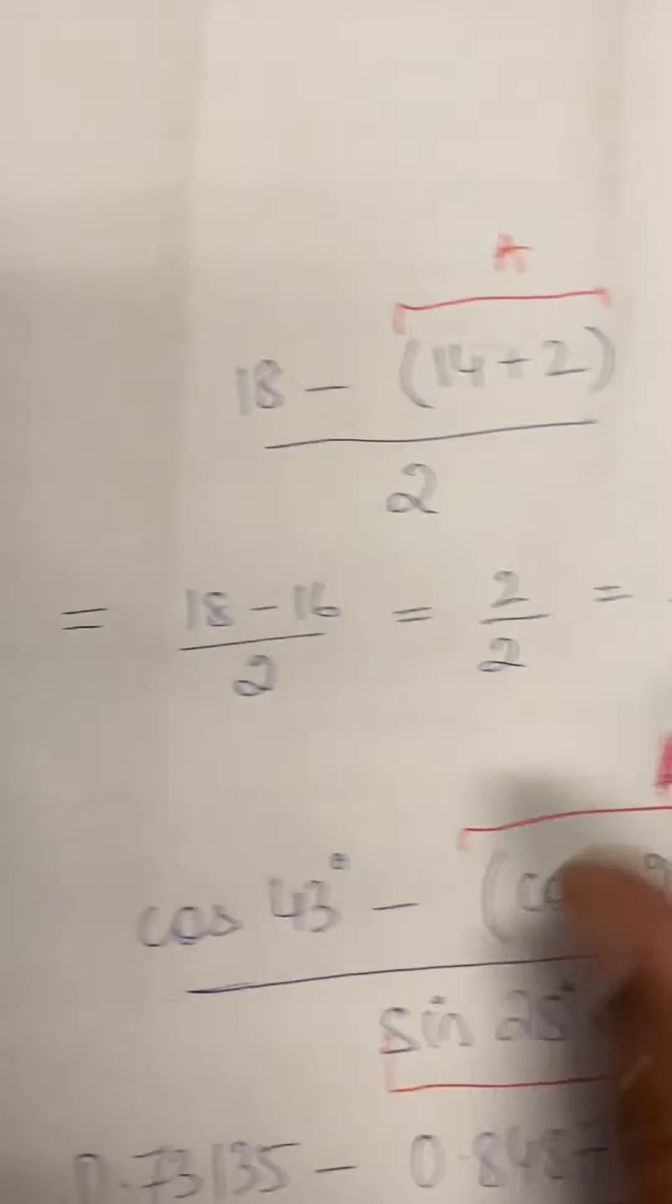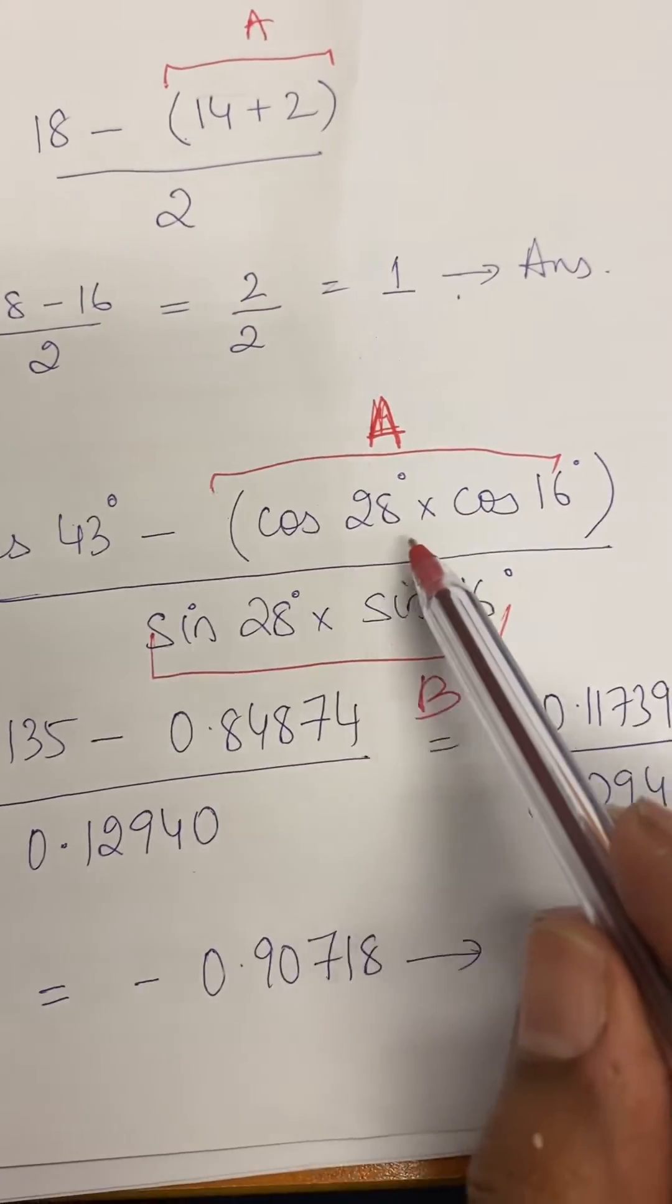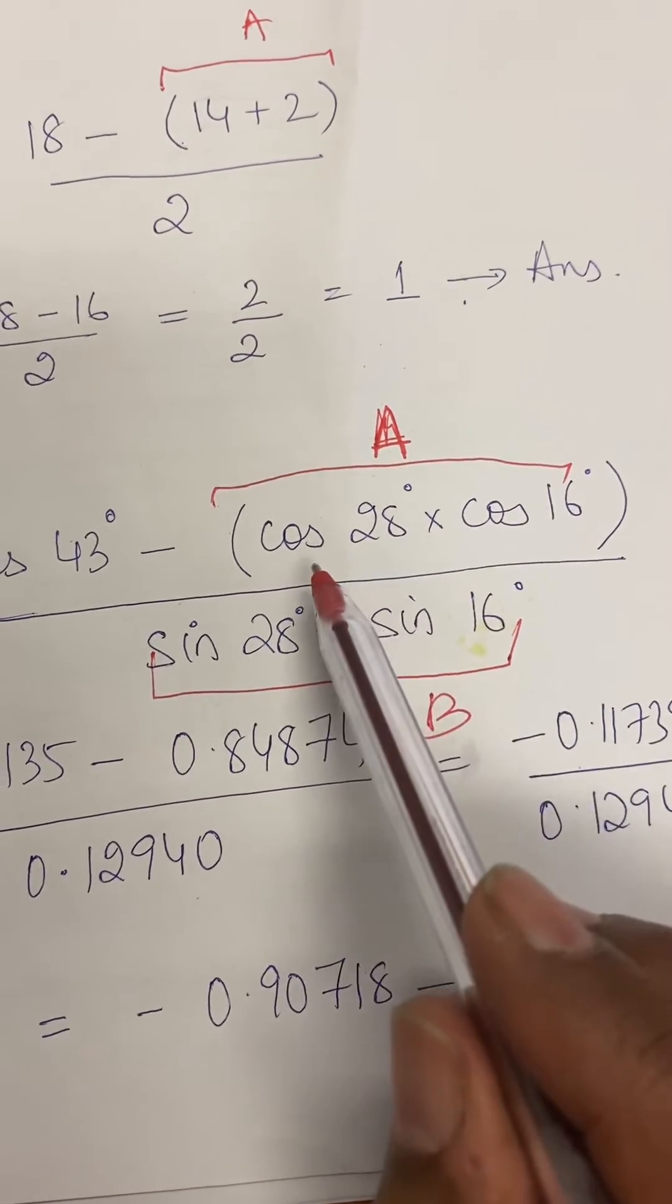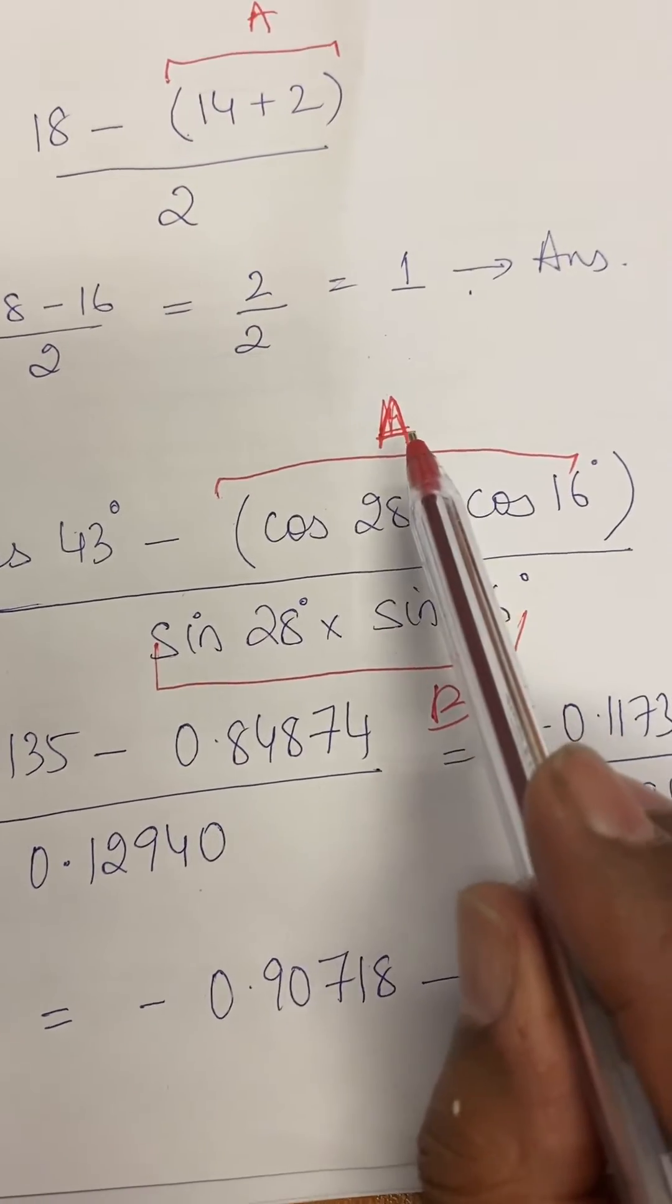Similarly, now if I take up a more complicated example, you have cos 28 multiplied by cos 16, we can put it as recall A, and this one as recall B.